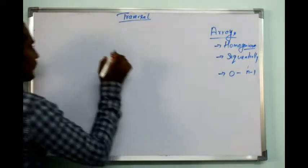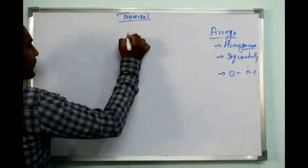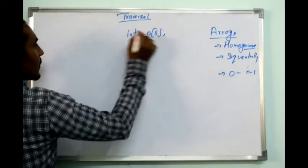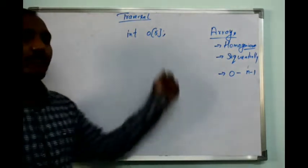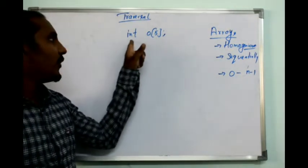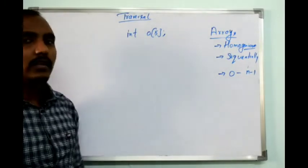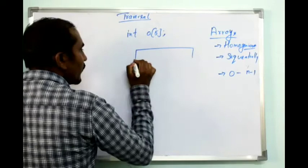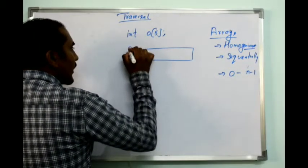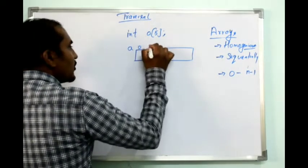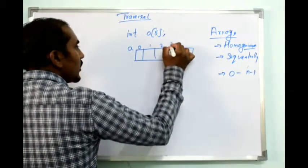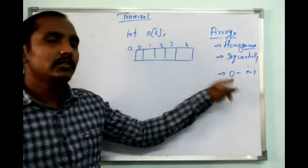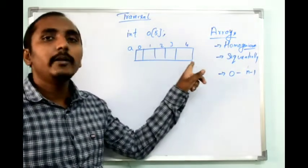I will take a simple example. If I create an array — integer a of 5 — that means I can store 5 elements of integer data type into a variable called a. Representing it as an array: the array name is a, starting index is 0, then 1, 2, 3, and 4. The starting index is 0 and the last index is n-1, which is 4.